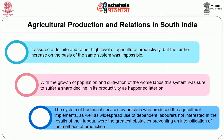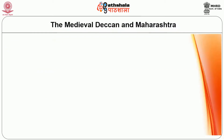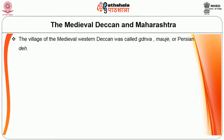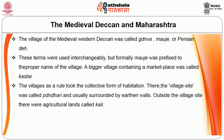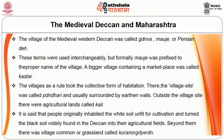The village of medieval western Maharashtra was called Gavna (from Sanskrit Grama), Moje (from Arabic Moza), or Persian Deh. These terms were used interchangeably, but formally Moje was prefixed to the proper name of the village. A bigger village containing a market place was called Kasbe. The village as a rule took a collective form of habitation — the village site was called Pandri and was usually surrounded by earthen walls. Outside the village site were agricultural lands called Kali, with the people originally inhabiting white soil and turning the black soil of the Deccan into agricultural fields.